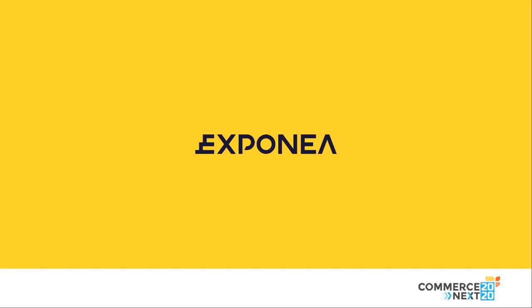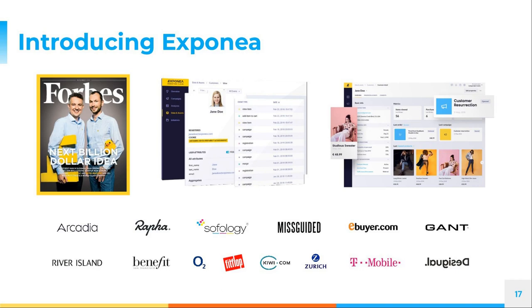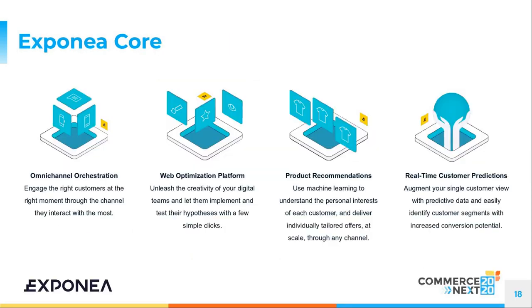Sure, thank you. Great to be here. First, a brief introduction to who Exponia are. We are a customer data platform with a campaign execution layer as well, so we're able to deliver campaigns based on the data we collect. We track, combine, and analyze customer data at an individual level — both online and offline — allowing businesses to understand customer behavior at a granular level and in real time. You can actually see customers browsing your website in real time, and use that data to execute campaigns at an individual level using AI or machine learning, or at a mass level through email, website, Facebook, or any channel.